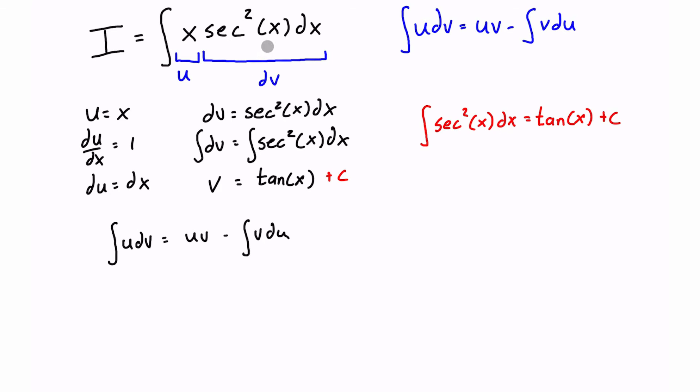This is the original thing that we were looking for, so we can write that on the left-hand side. And now we just have to plug and chug. So we have u and v, and right here we have u is equal to x, and v is tan of x plus c. So we can plug that in.